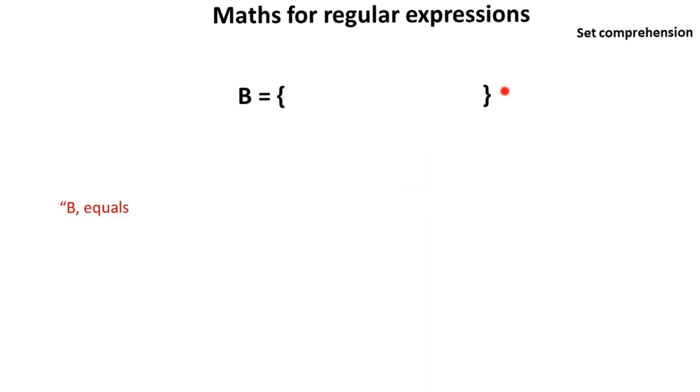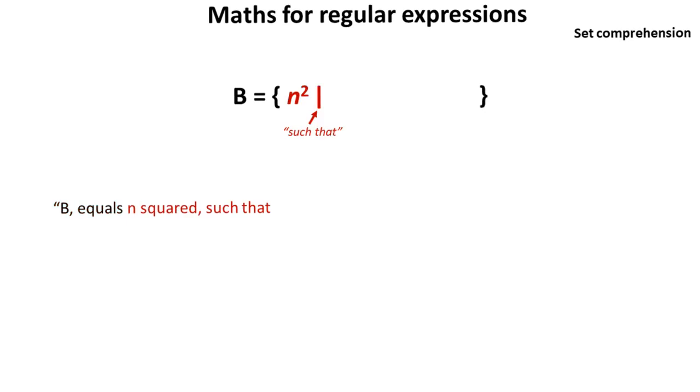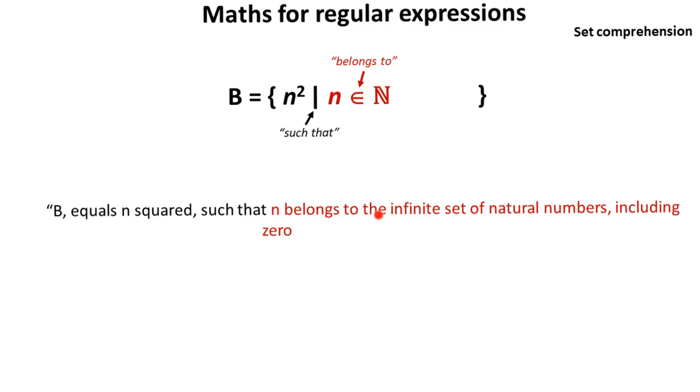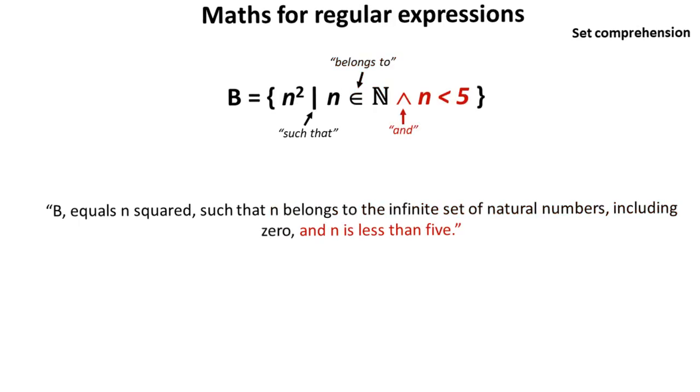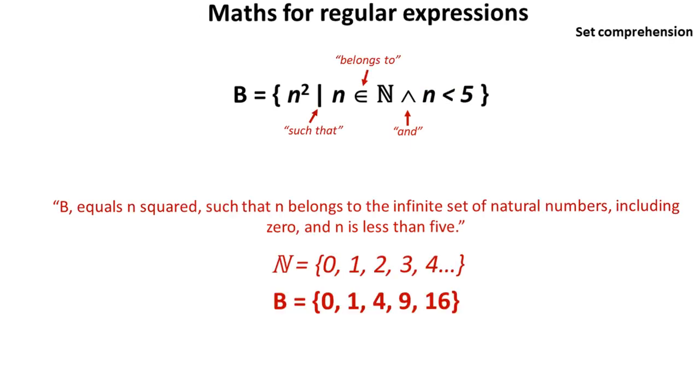We're going to take another look at this set comprehension, but we're going to write it out in English using the knowledge we've just got. It should start to make a lot more sense. We've got the set B equals N squared such that N has to belong to the infinite set of natural numbers, which include 0, and N must be less than 5. So let's just look at that again. The set B is going to be N squared. We've got to make sure that N belongs to the natural numbers, where the natural numbers are 0, 1, 2, 3, 4, but only where N is less than 5.